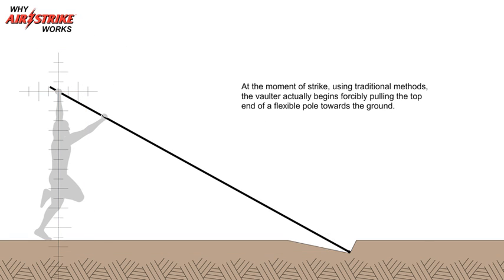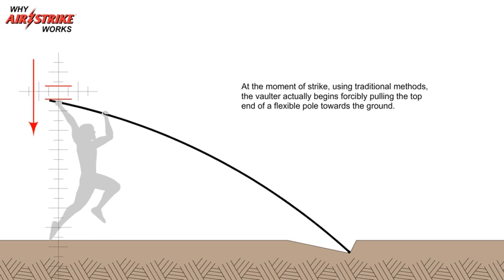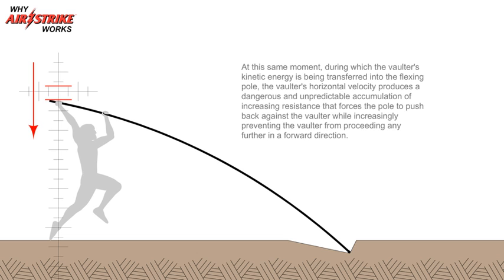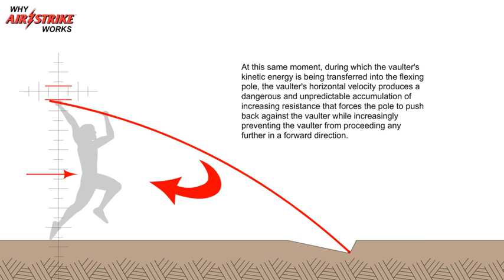At the moment of strike, using traditional methods, the vaulter actually begins forcibly pulling the top end of a flexible pole towards the ground. At this same moment during which the vaulter's kinetic energy is being transferred into the flexing pole, the vaulter's horizontal velocity produces a dangerous and unpredictable accumulation of increasing resistance that forces the pole to push back against the vaulter while increasingly preventing the vaulter from proceeding any further in a forward direction.